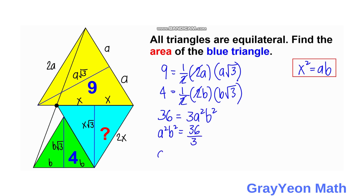A squared B squared equals 12. If we simplify further, we take the square root of both sides, so AB equals the square root of 12.